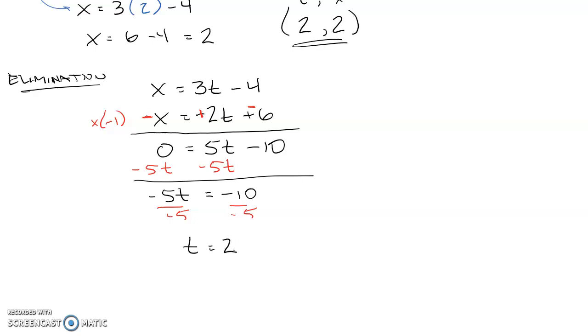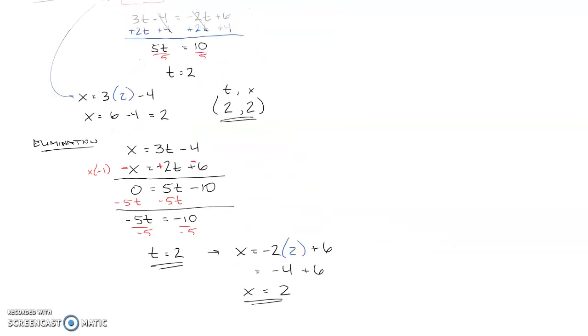And just like before, I can plug it into either equation. And I might as well try the other one now. So x equals negative 2 times 2 plus 6, which would be negative 4 plus 6. So x, once again, is 2, which is what we expected because that was the solution we got in the first part.